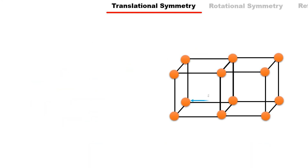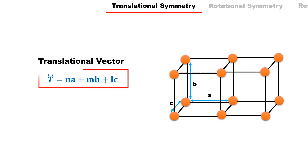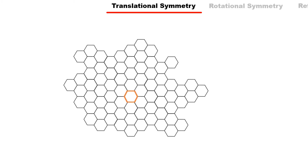In a 3D lattice, due to the arrangement of atoms in three directions x, y, and z, a third term is added to the translational vector. In general, the translational vector for a lattice point is defined by the equation T = n·a + l·b + m·c, where a, b, and c are primitive translational vectors and n, l, m are integers. Translational symmetry is the shift of a specific pattern in a specific direction with no rotation or reflection. During translational symmetry, the distance, angle, size, and shape between two points remain constant — only the location changes. If a point shifts, its surroundings will be exactly the same as before.